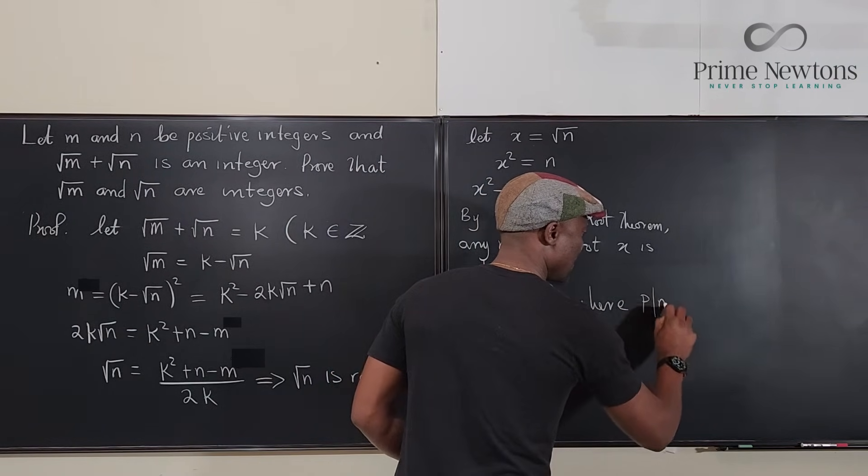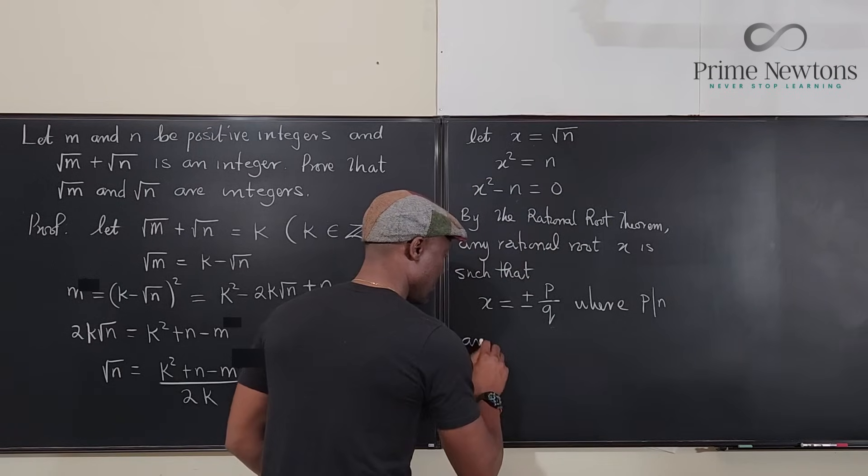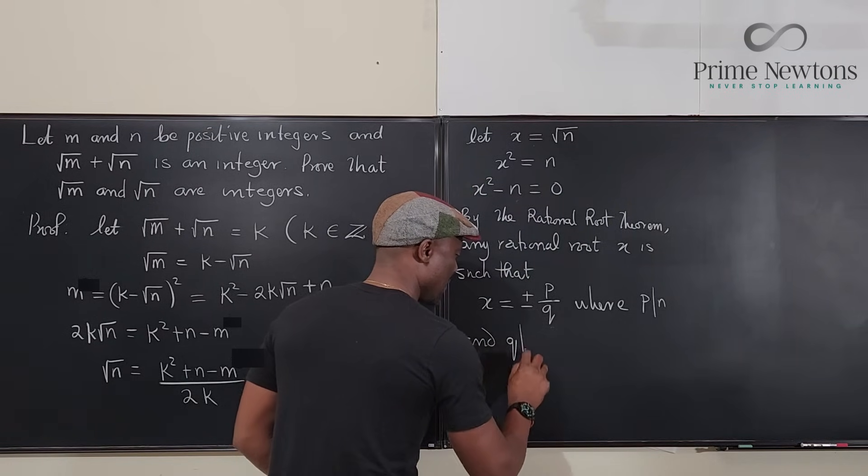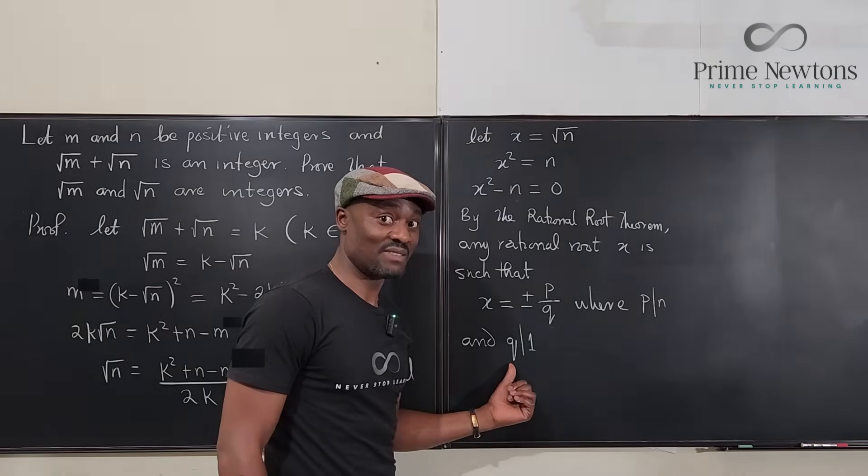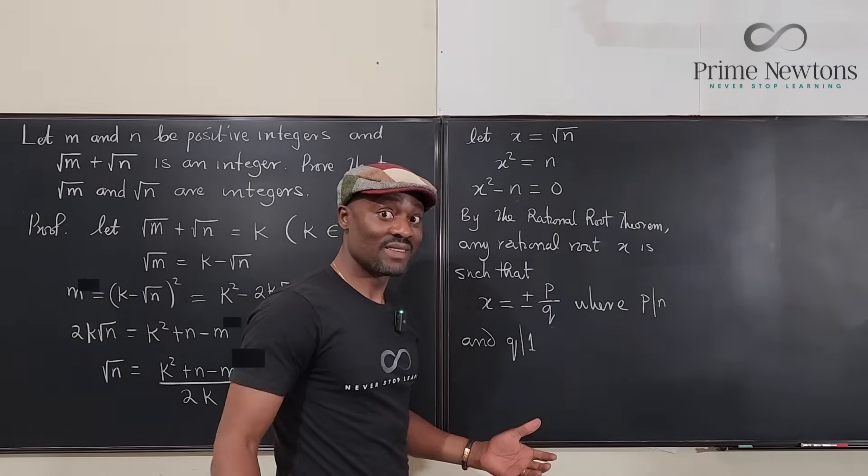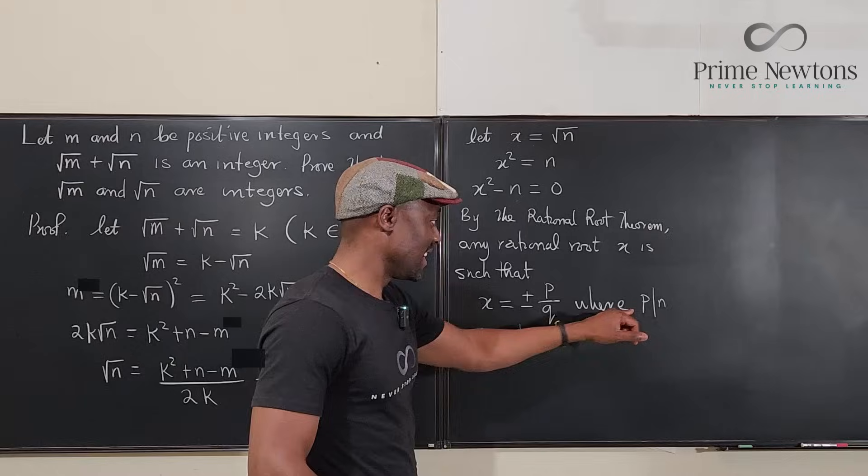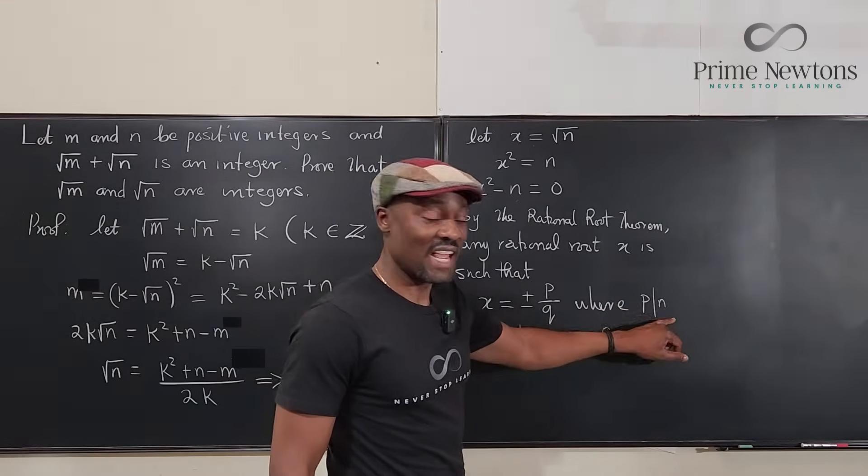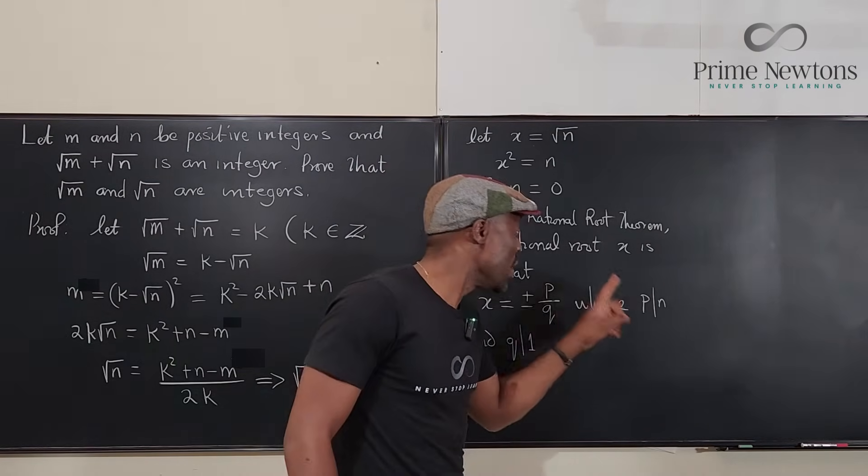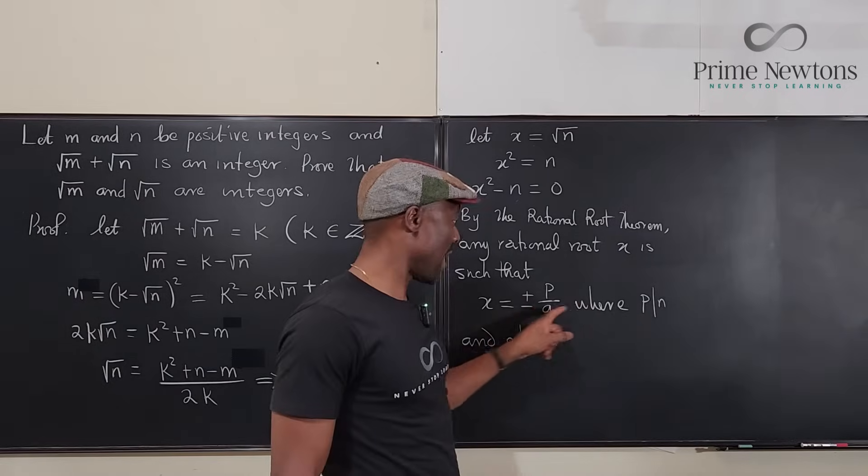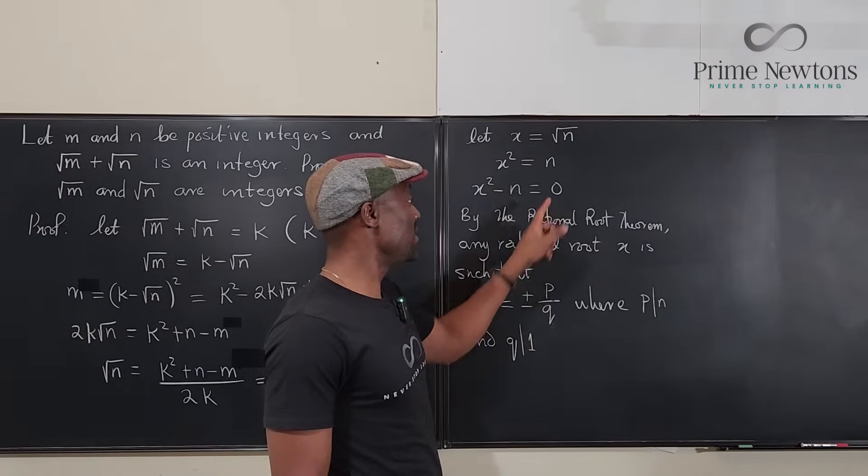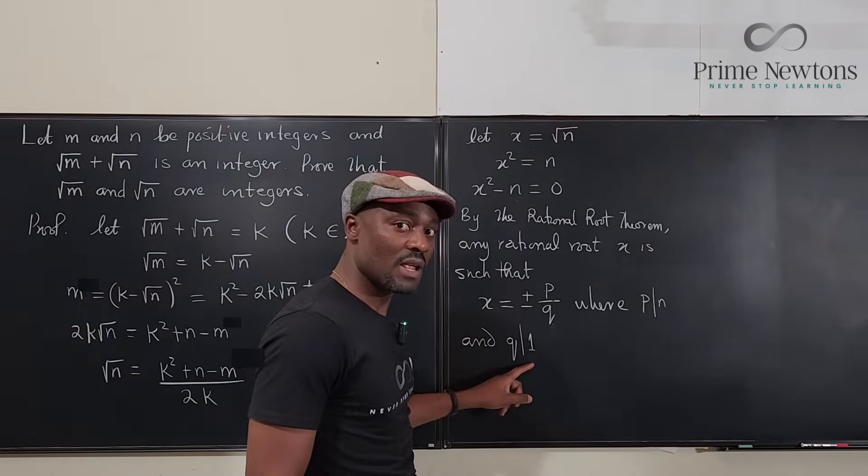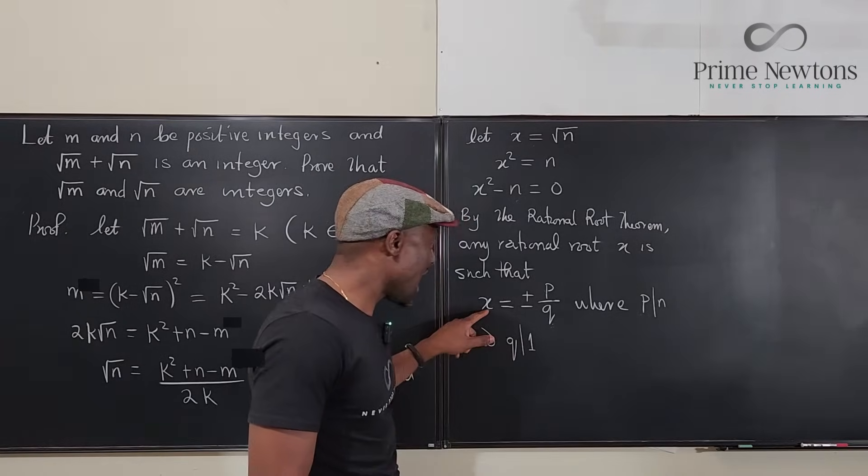p divides n and q divides 1. But we know that the only number that divides 1 is 1. And p is an integer that divides n. We don't care what p is, but we know that p is an integer by the rational root theorem. p is an integer, q is an integer, p divides n, q divides 1.